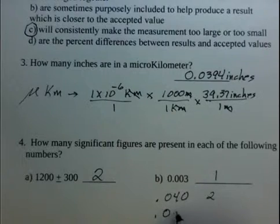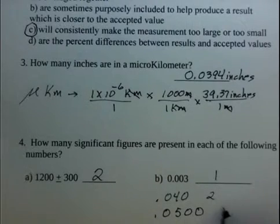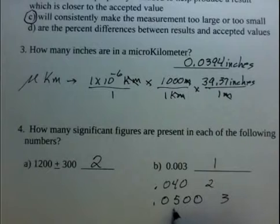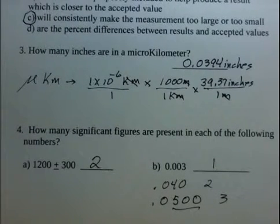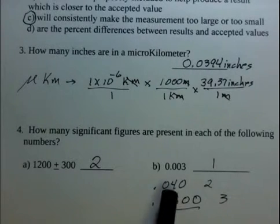Or .0500, three significant figures. Zeros to the right in decimal numbers are significant. Zeros to the left are not significant. The zero to the left of the four or the five, not a significant digit.